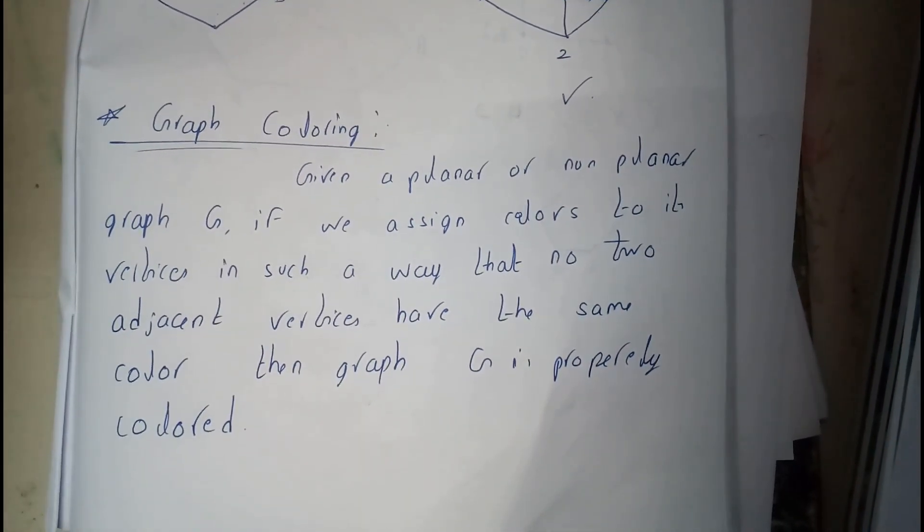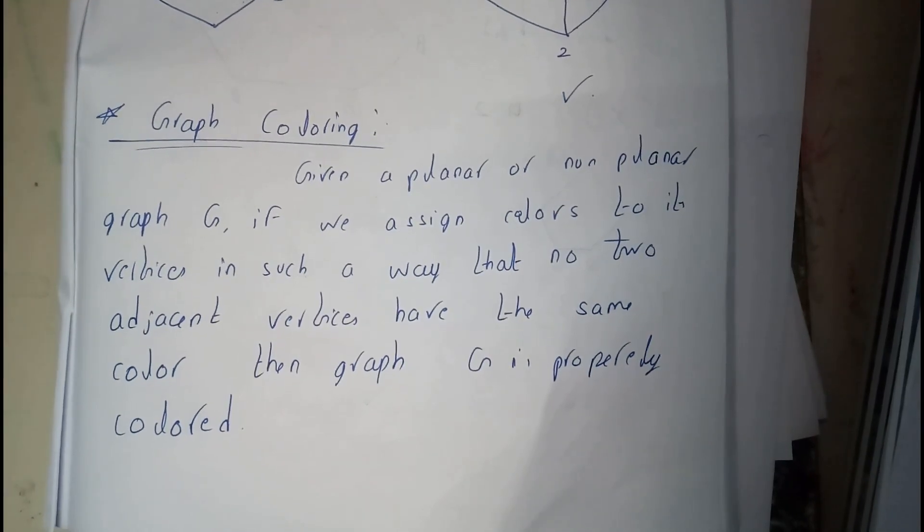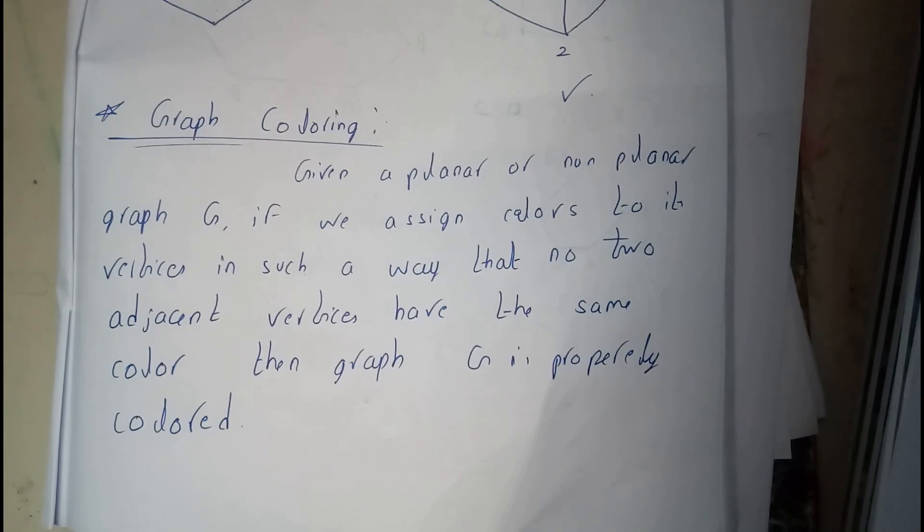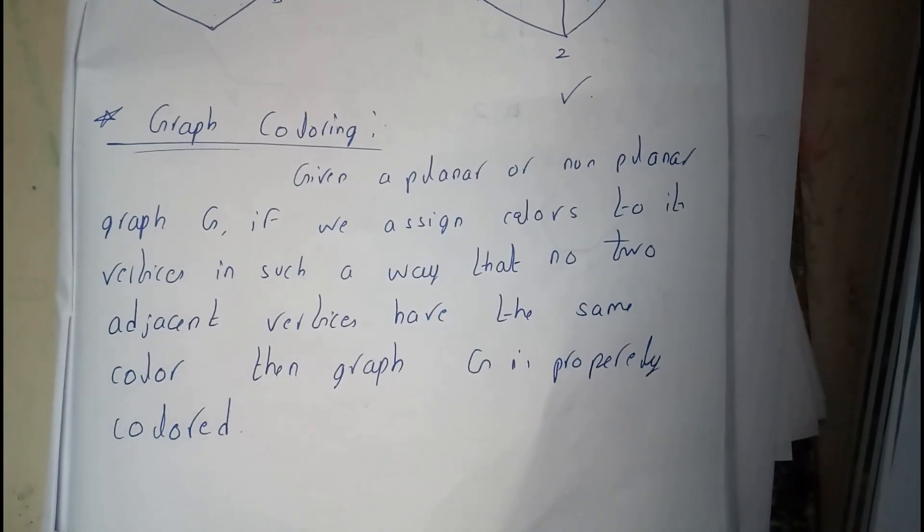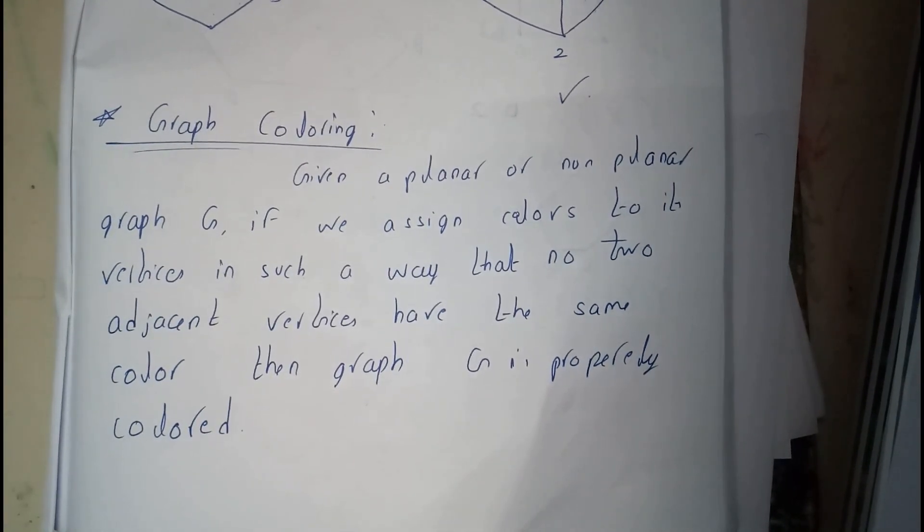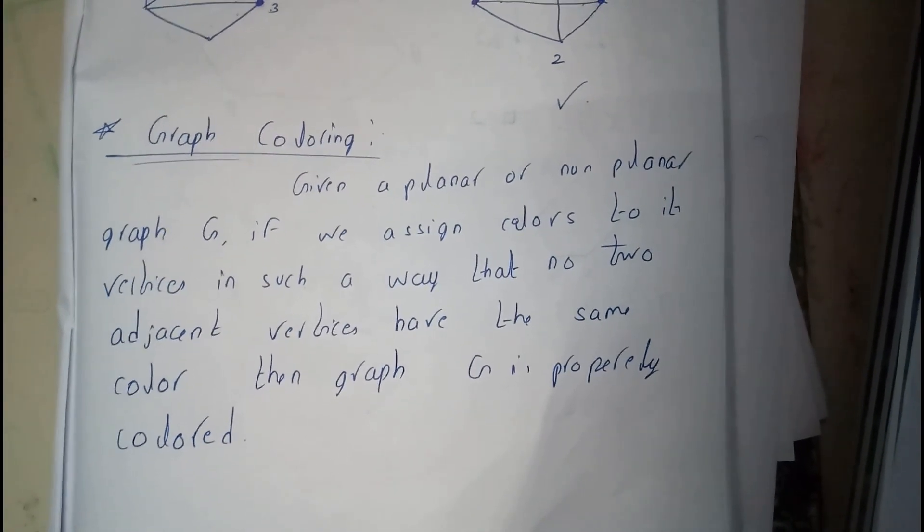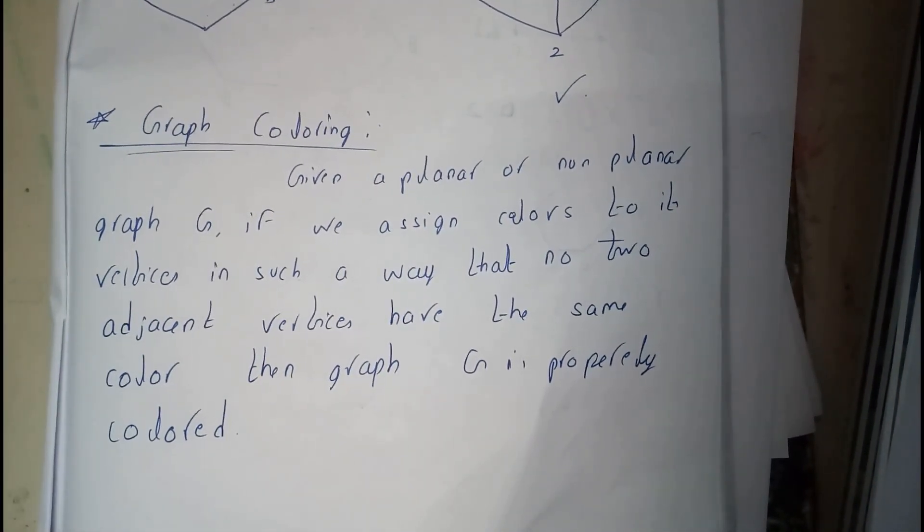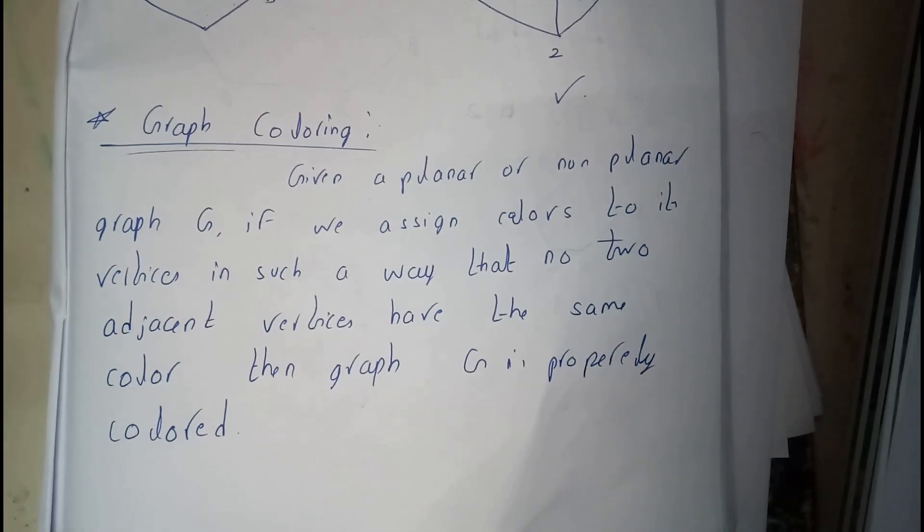If it is done for a planar or a non-planar graph G, if we assign colors to each and every vertex differently, such that no two adjacent vertices have the same color, that is what is called graph coloring.